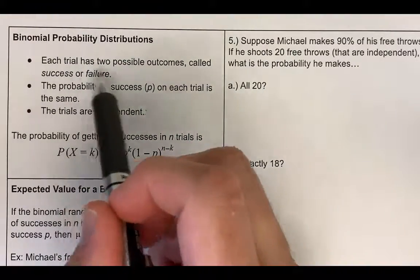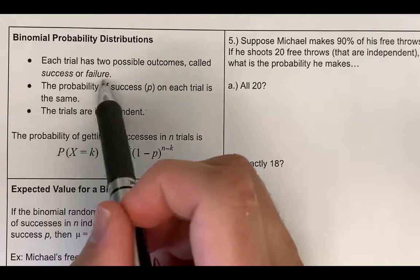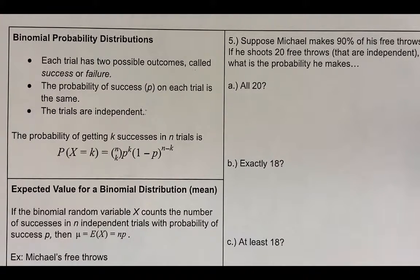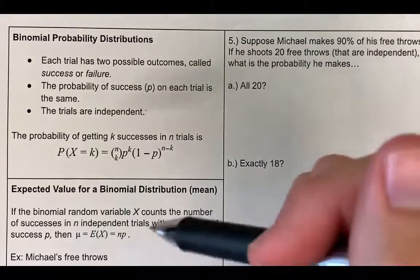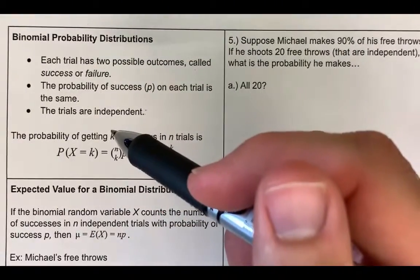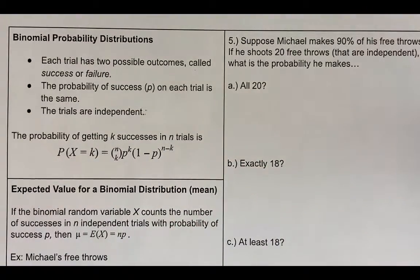Each trial has two possible outcomes called success or failure. In the previous dice example, if you got a 3, that was a success; if you didn't, that was a failure. The probability of success P on each trial is the same — for our dice roll, the probability of getting a 3 was the same on each roll. The trials are independent, meaning one trial does not affect another one, and that was true for all of our dice rolls.